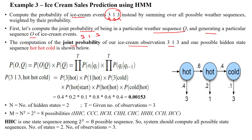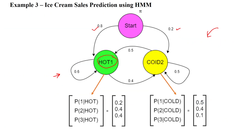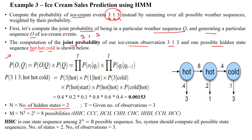The hidden states can be taken as hot or cold. The number of hidden states is two — hot and cold. The number of observations is three: 3, 1, 3. Based on this, the number of possible state sequences will be 2 to the power 3, equal to 8. That means we have three observations for three days, and we have two hidden states, so we will get 8 possible sequences.